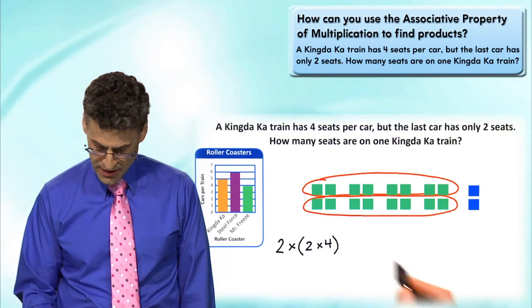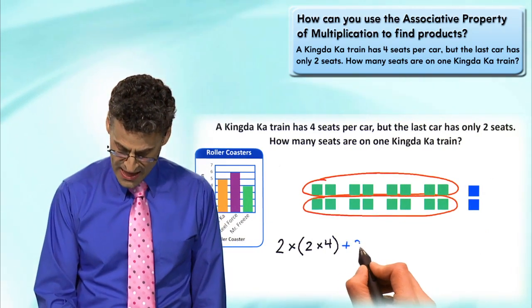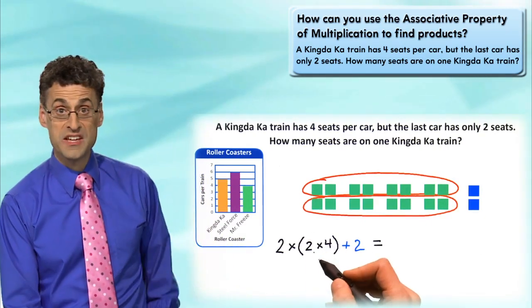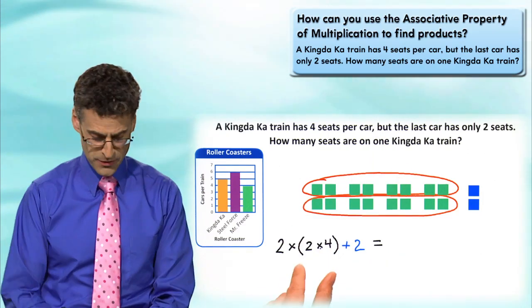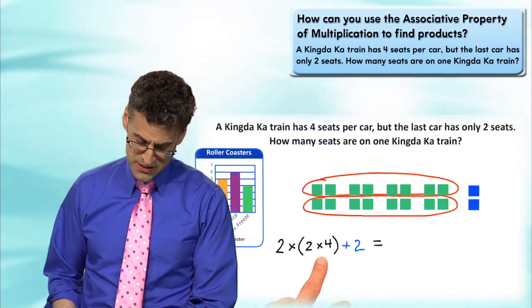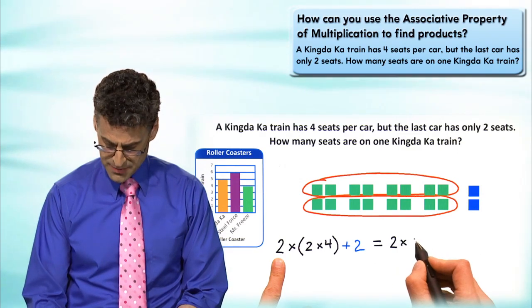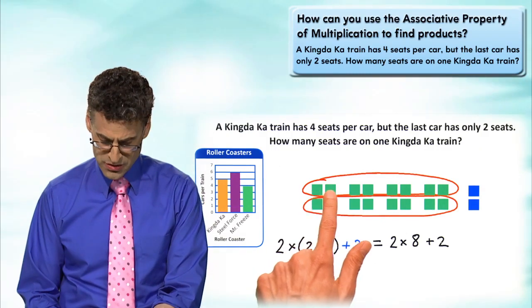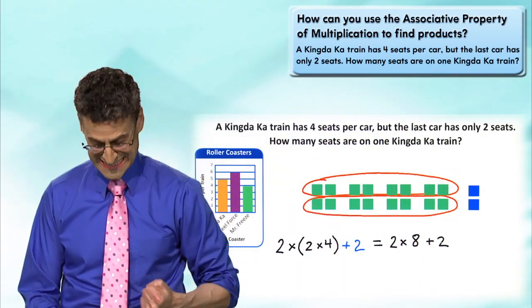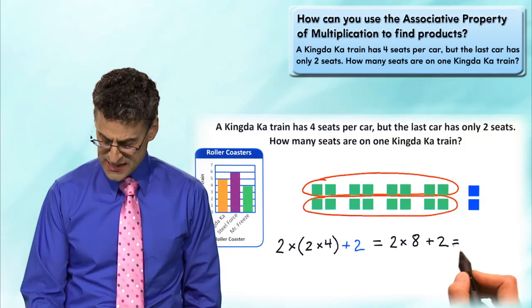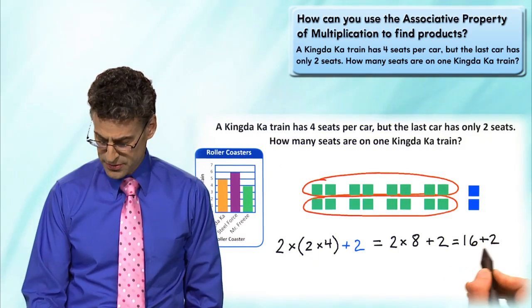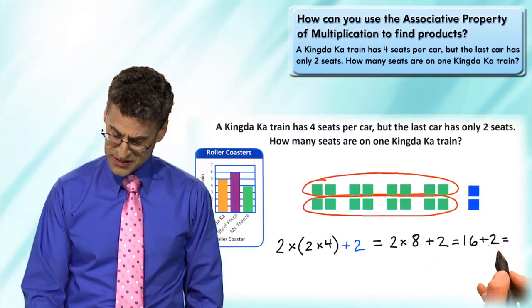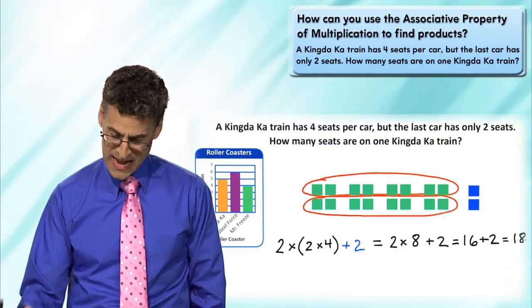Don't forget about these two extra seats - the little hangout guys. We have parentheses, so we perform the operation inside the parentheses first: two times four equals eight. So this becomes two times eight, plus two. Two times eight is sixteen, and then we add the two - remember, multiplication first, then addition. Sixteen plus two is eighteen.